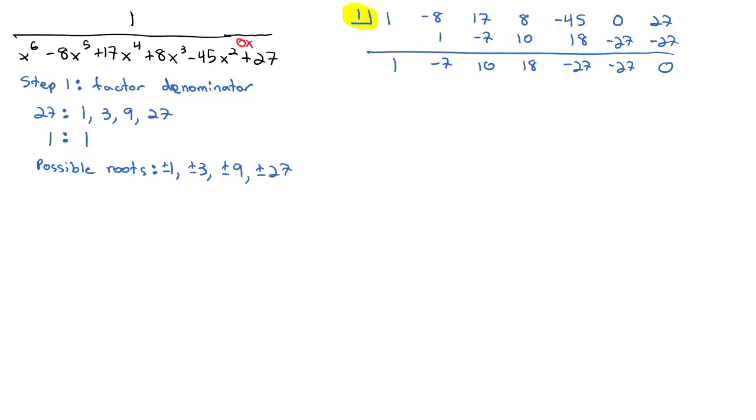We might be suspicious if we have a multiple root, like a double root or a triple root, so let's try the 1 again and see if it works. Now we only need to look at the new terms. Bring down the 1, gives us 1, minus 7 is negative 6, times 1 is negative 6, plus 10 is 4, times 1 is 4, plus 18 is 22, times 1 is 22, minus 27 is negative 5, times 1 is negative 5, and you can see this is not going to work. So 1 is done.